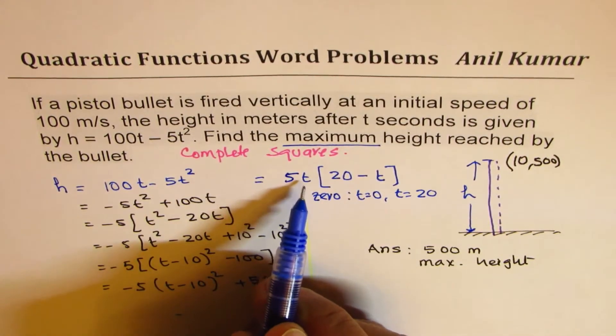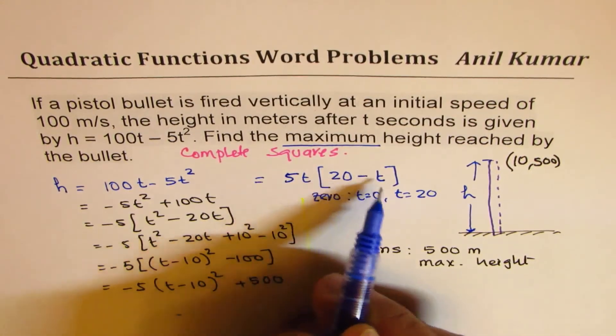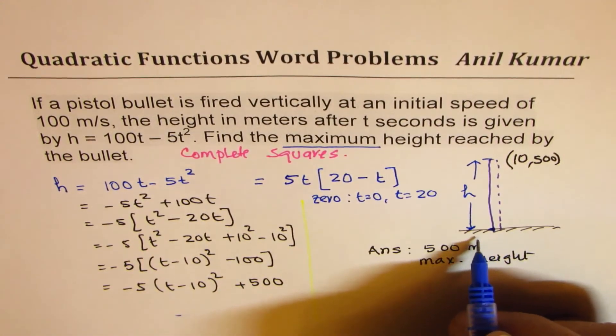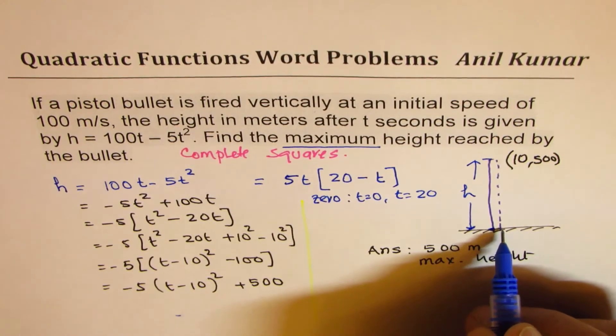So if I write 0 here, we get a 0. The other 0 is after 20 seconds. So that means you shot when t equals to 0 and it fell down.